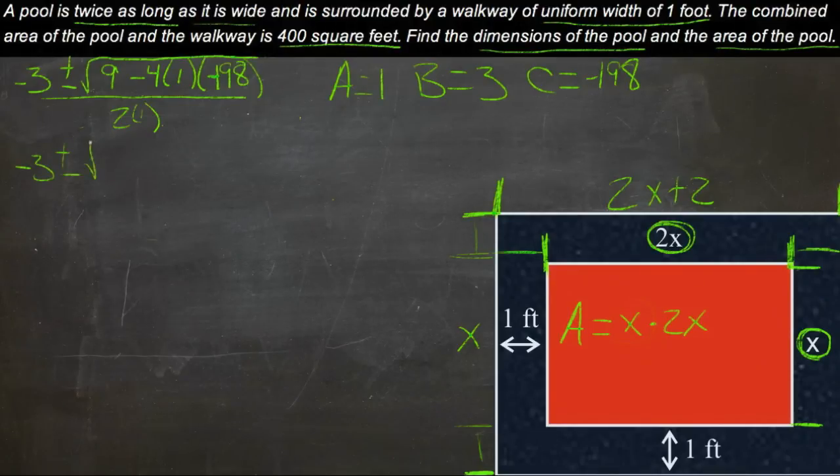plus or minus the square root of 9 minus, what, negative 792. So minus negative 792 would be plus, all over 2.